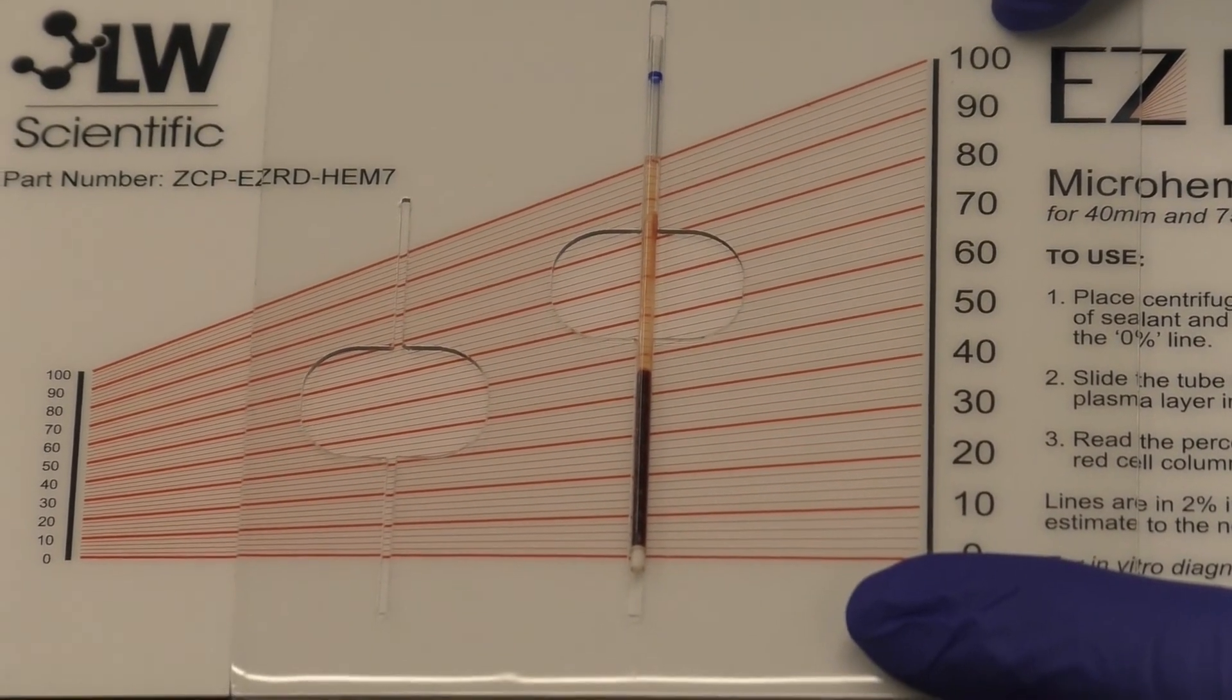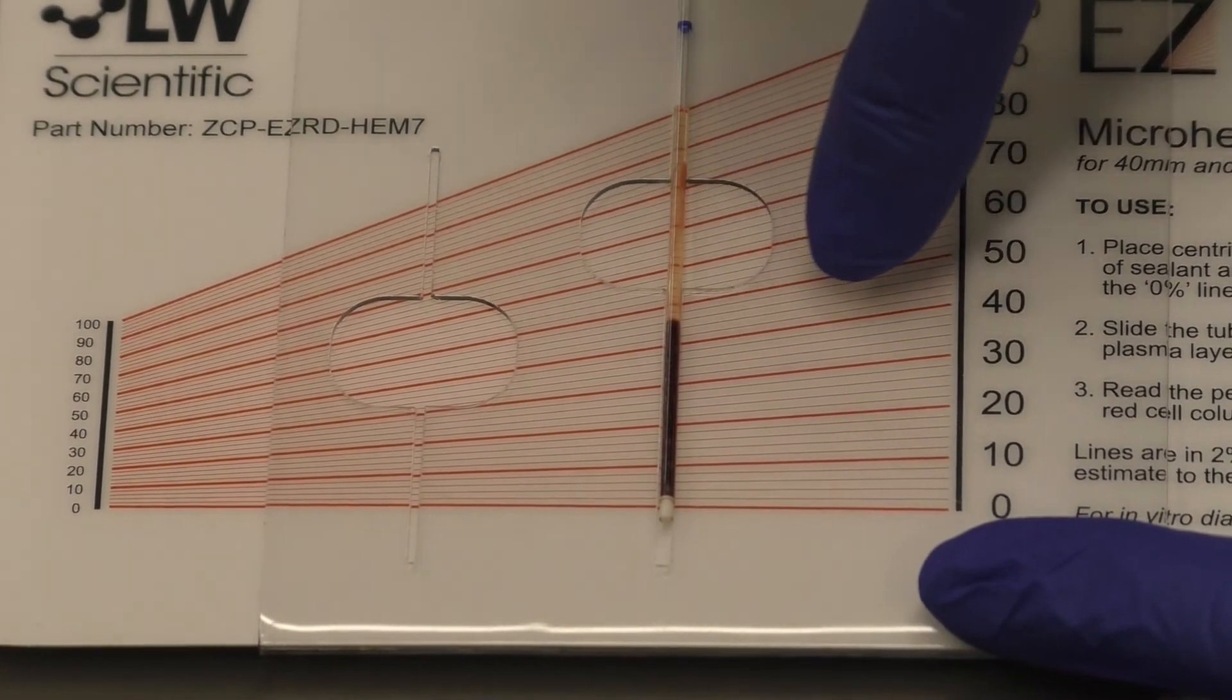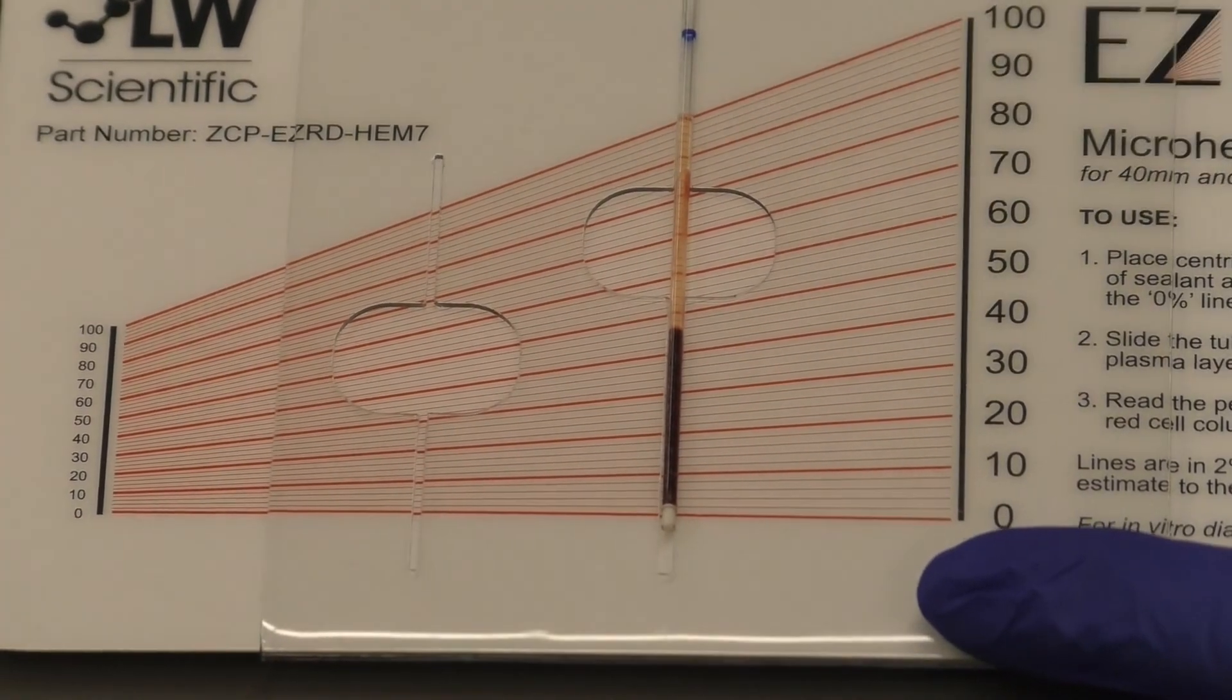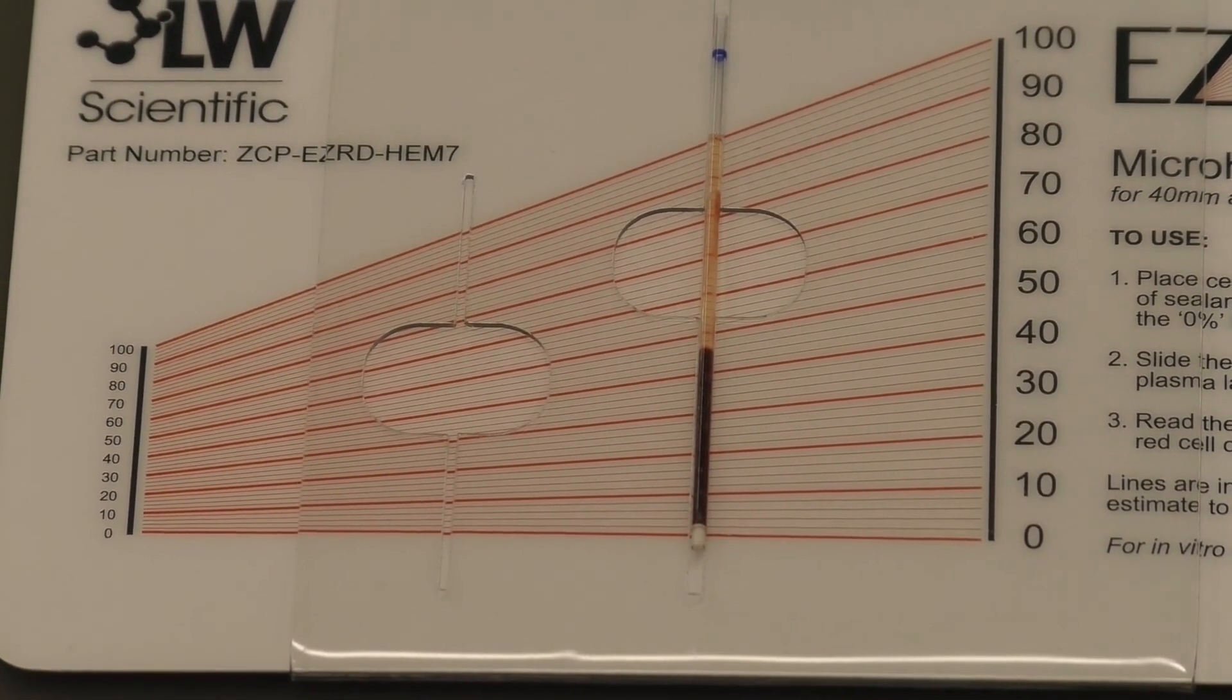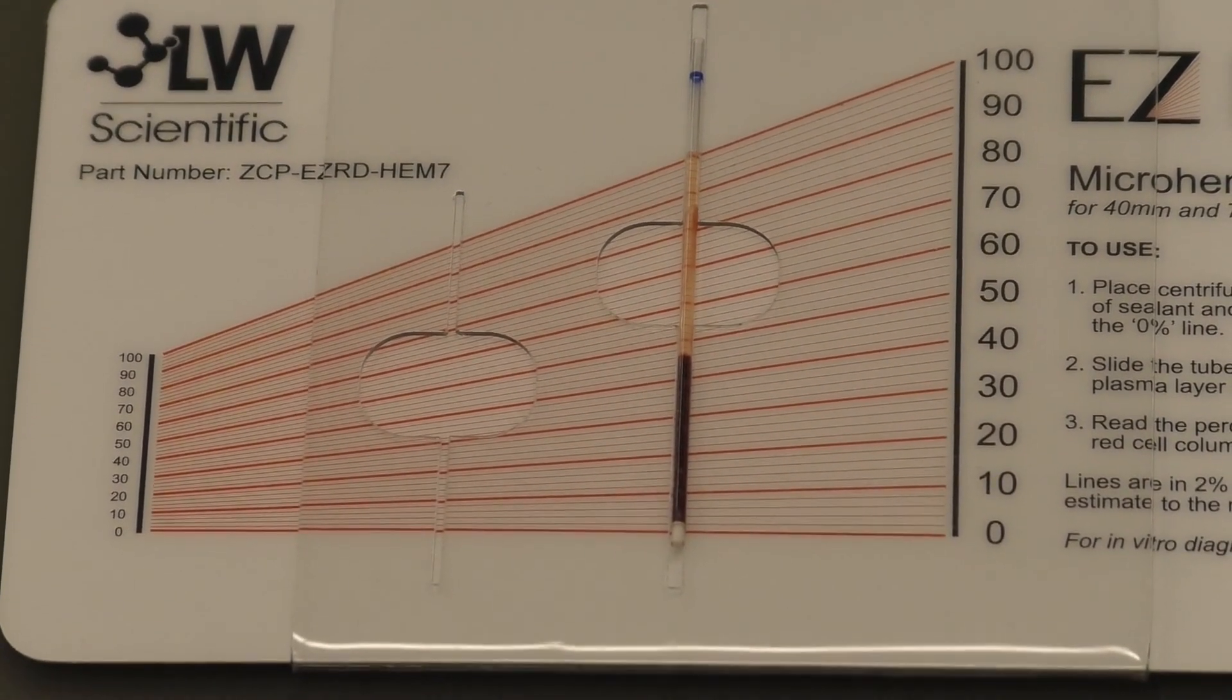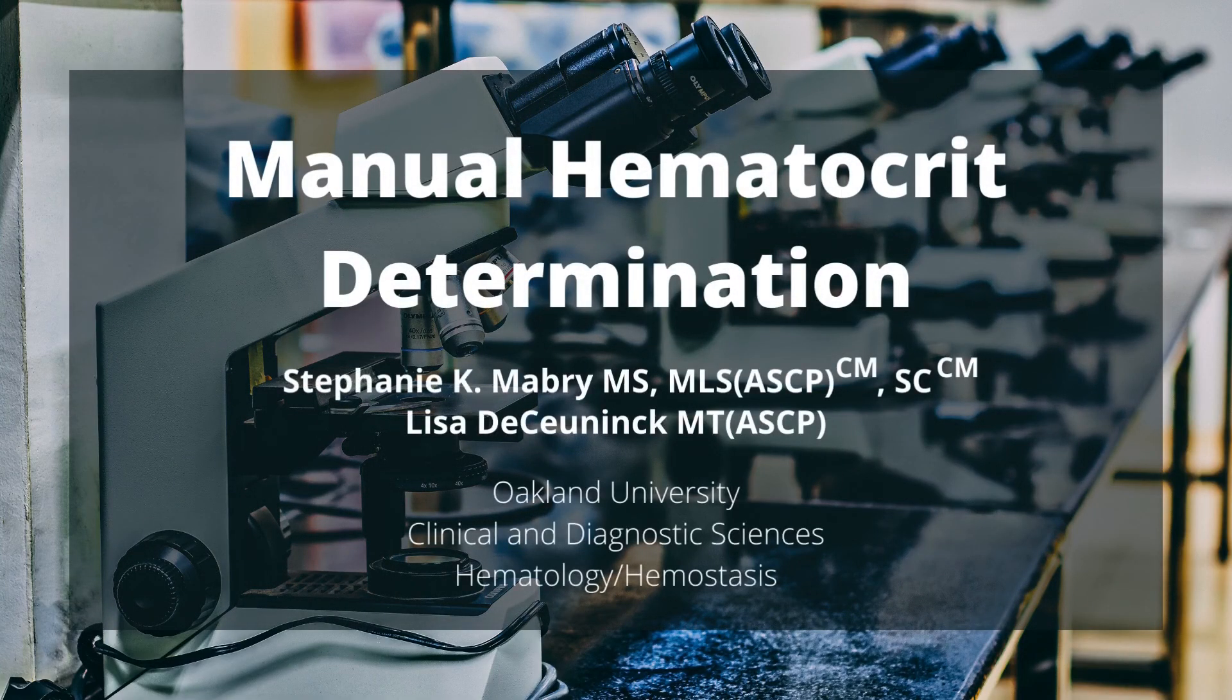Read the percentage height of the packed red cell volume. Do not include the buffy coat layer of white cells, if present. Report to the nearest one percent. Testing is performed in duplicate and results should agree within one percentage unit of each other.